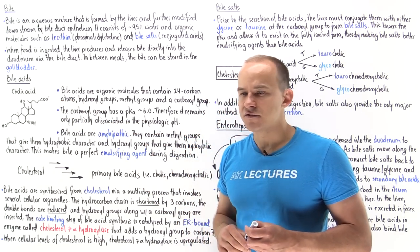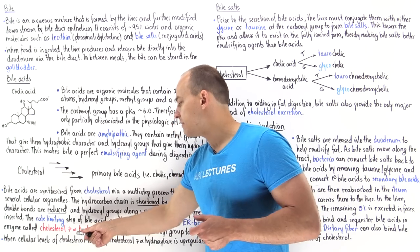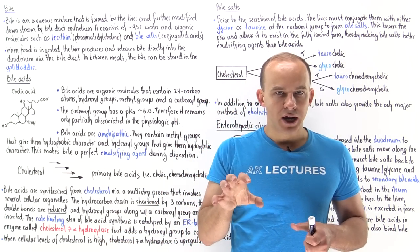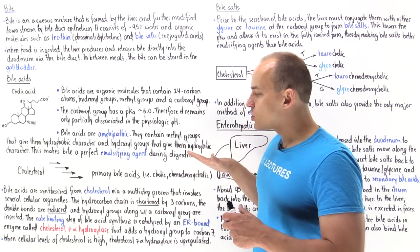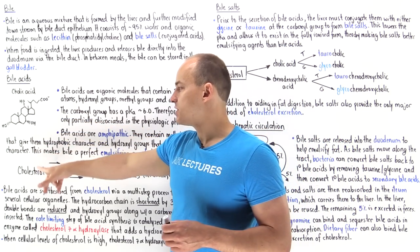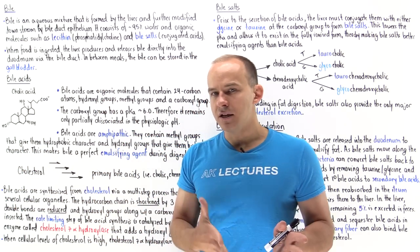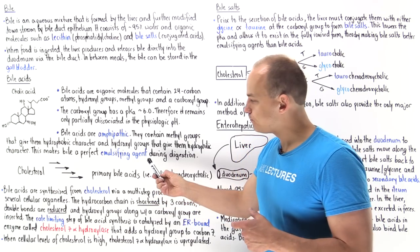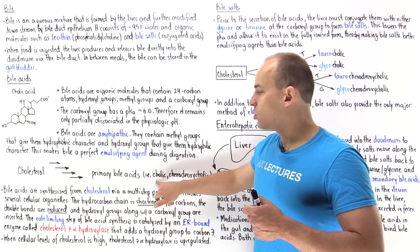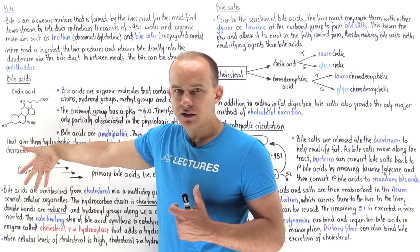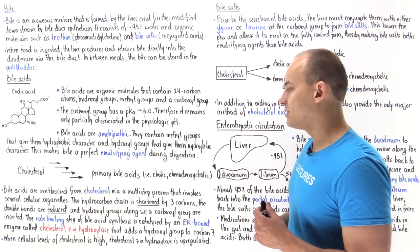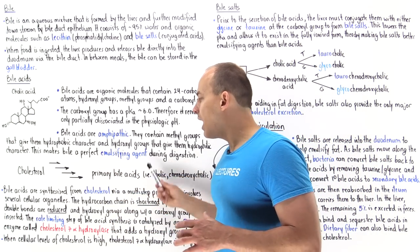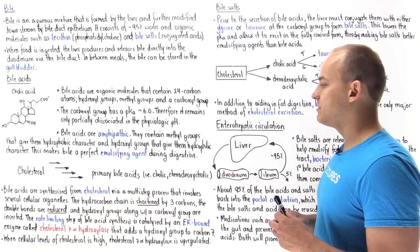The rate-limiting step of forming bile acids from cholesterol is catalyzed by cholesterol 7-alpha hydroxylase. This enzyme is found only in hepatocytes, bound to the ER membrane, and is a cytochrome P450 enzyme. High levels of cholesterol upregulate its activity, allowing more primary bile acids to be formed. However, as cholic acid levels increase, this creates a negative feedback loop that decreases the expression and activity of cholesterol 7-alpha hydroxylase.